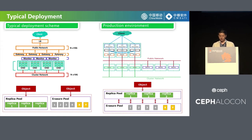Erasure coding is a data protection method that divides data into segments, expands the codes, and stores them in different locations such as disk, storage nodes, or other geographic locations. Copy storage and erasure coding are two common data-redundancy technologies in the storage field. Erasure coding has higher disk utilization than copy storage. Ceph has supported erasure codes for a long time. We can use an erasure pool for cold data and a replica pool for hot data. In order to achieve data tiering, we developed automatic migration between hot data and cold data based on the storage class function of the community. This feature allows data to be migrated across different pools.